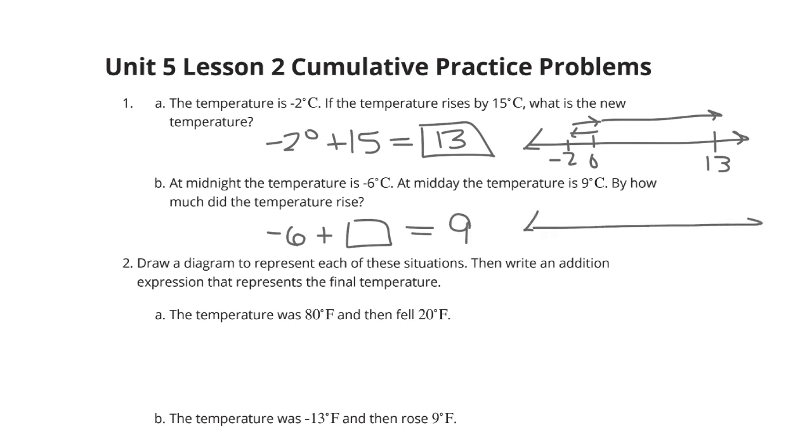Again, if we start off with a number line here, we're at 0, and we're going down to -6, and now we're going to go up to 9. Well, I know that the first part of that, from -6 to 0, is going to be 6, and from 0 to 9 is going to be 9, and if I add 6 with 9, that's a total of a 15 degree increase.